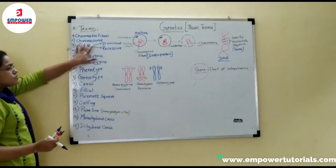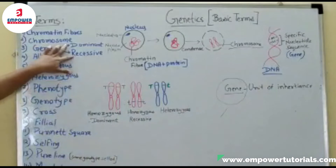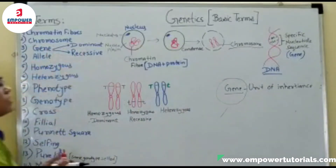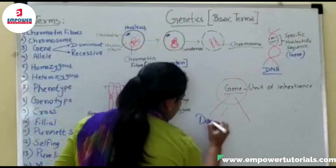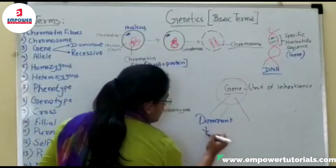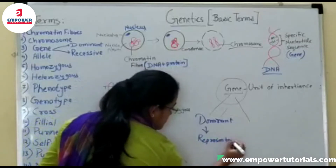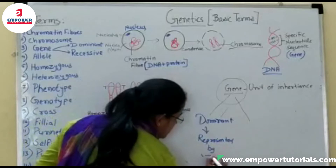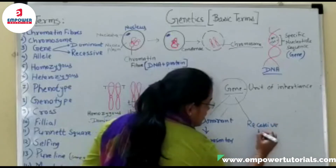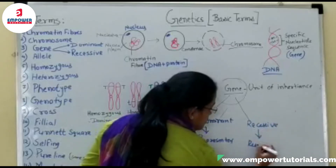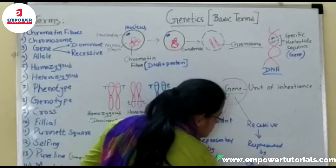Have you seen similarities and dissimilarities between your parents and yourself? Those similarities and dissimilarities are because of genes. So genes are a unit of inheritance. Now, genes can be of two types: dominant and recessive. Dominant genes are always represented by a capital letter — for example, capital T. Recessive genes are represented by a small letter — for example, small t.